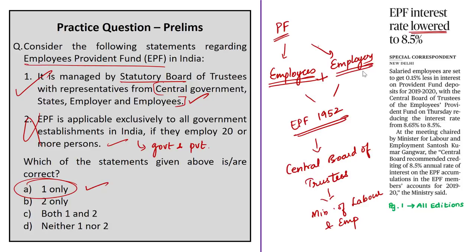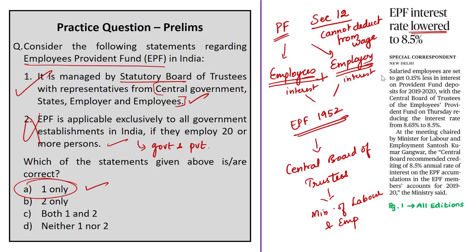Under the EPF scheme, an employee pays a contribution and an equal contribution is paid by the employer. Under Section 12 of this Act, the employer cannot deduct the employer's share of PF from the wages of employees — such reduction is a criminal offense. When an employee retires, they receive a lump sum including their own contribution, the employer's contribution, and interest on both. EPF is also applicable to contract employees as per a Supreme Court order. The interest rate was 8.65% per annum until the Central Board of Trustees decided to reduce it to 8.5% for 2019–2020.